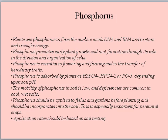Phosphorus. Plants use phosphorus to form the nucleic acids DNA and RNA, and to store and transfer energy. Phosphorus promotes early plant growth and root formation through its role in the division and organization of cells. It is essential to flowering, fruiting, and the transfer of hereditary traits. Phosphorus is absorbed by plants depending upon soil pH, and its mobility in soil is low, with deficiencies common in wet soil.